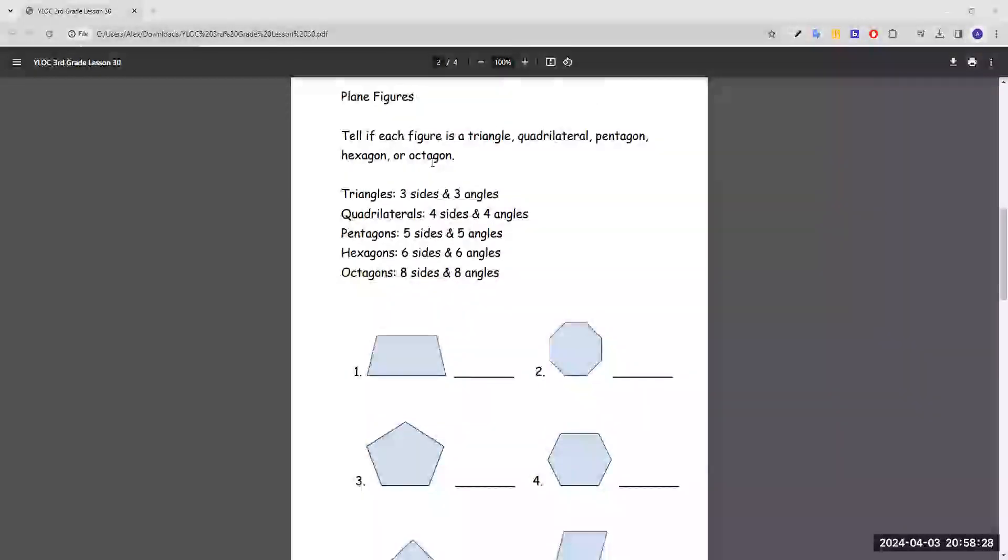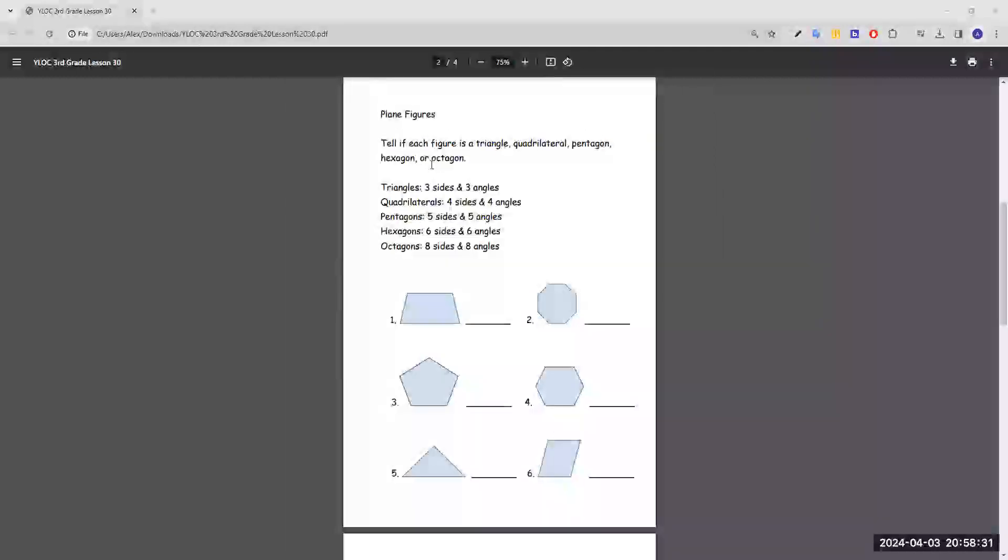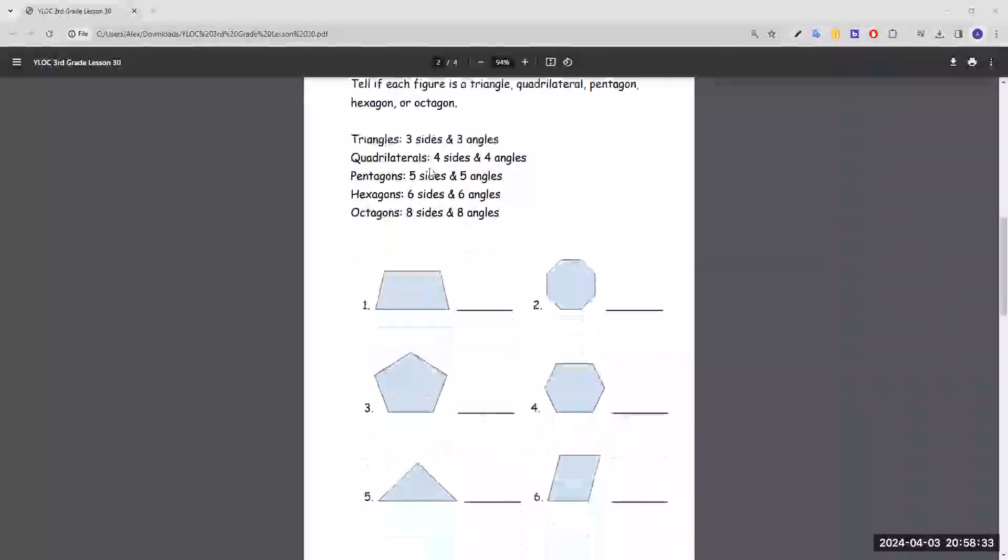Moving on to telling if each figure is a triangle, quadrilateral, pentagon, hexagon, or octagon. This part briefly sums up the characteristics of each shape.